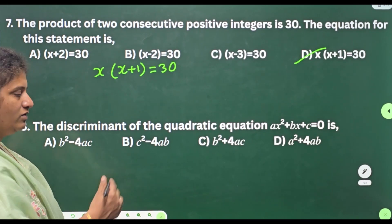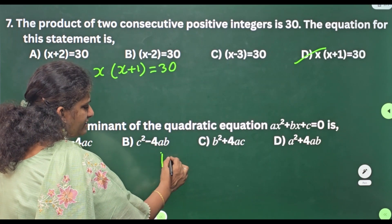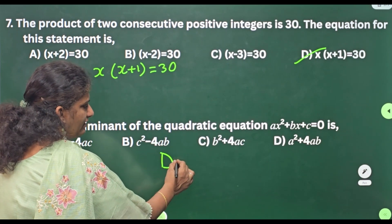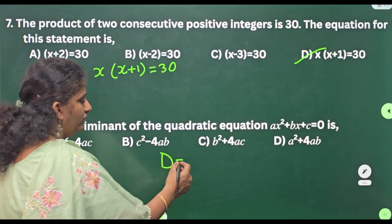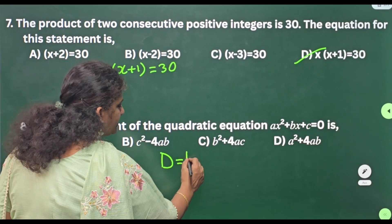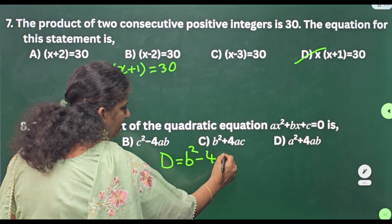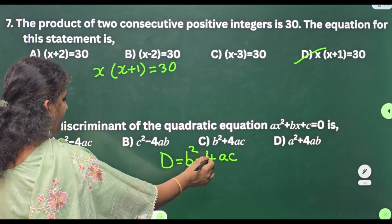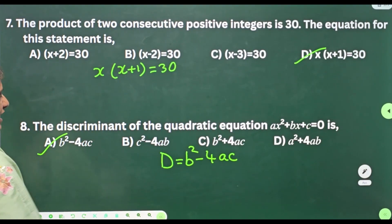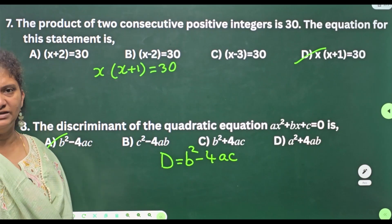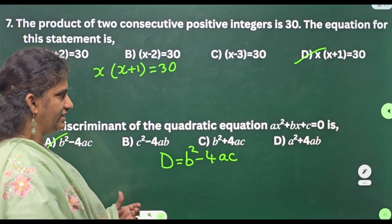Eighth one: the discriminant of a quadratic equation ax² + bx + c = 0 is — what is the discriminant? Discriminant is denoted by the letter capital D or delta. What is discriminant? b² − 4ac. Where is this option? Option A is your answer — discriminant is b² − 4ac.